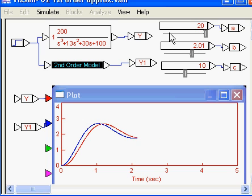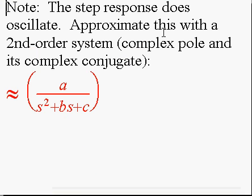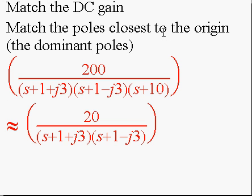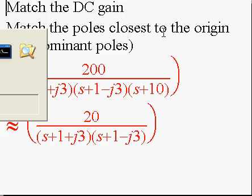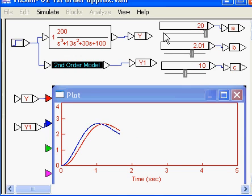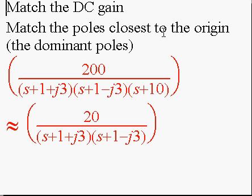For example here, I played around with A, B, and C to get a reasonable approximation for the system. I'm using a second order approximation because the system oscillates. To get oscillation I have to have a complex pole, and if I have a complex pole I need its conjugate, giving me a second order system. What I wound up with is A was 20, B was 2, C was 10 — giving me 20 over (S plus 1 plus j3)(S plus 1 minus j3) when factored. I've matched the DC gain and the dominant pole, giving two systems that behave almost the same.